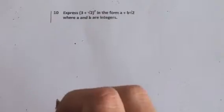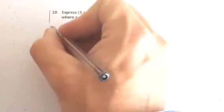OK, so here we have a question on surds. And we are asked to express (3 + √2)² in the form a + b√2.